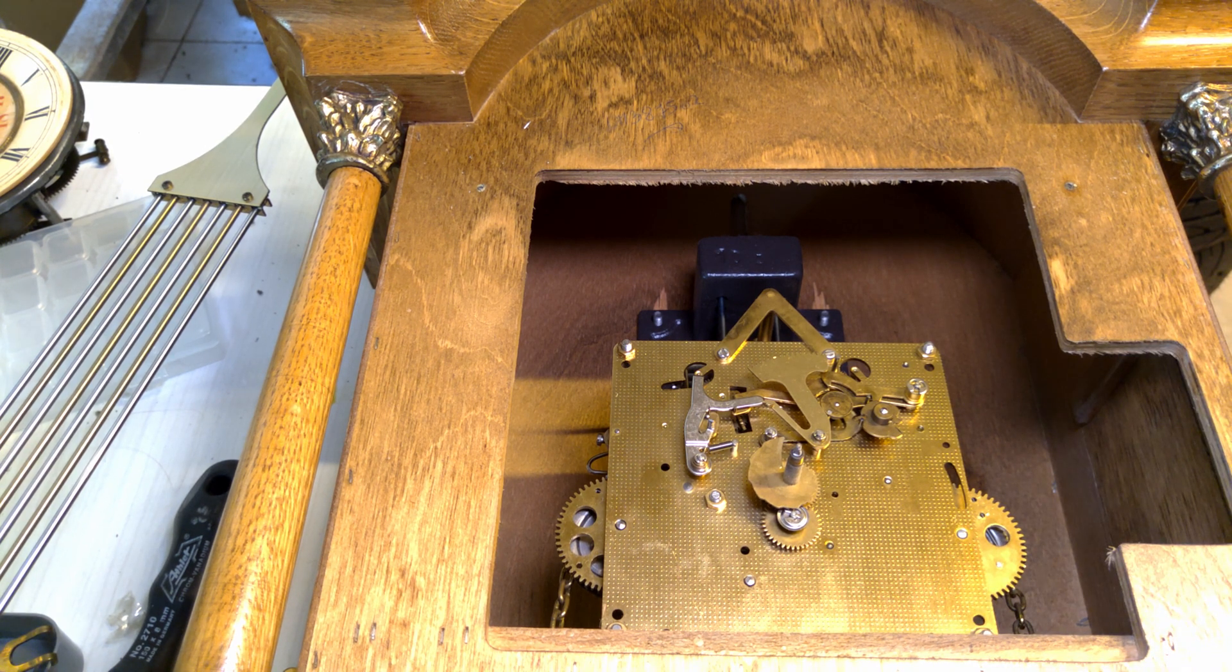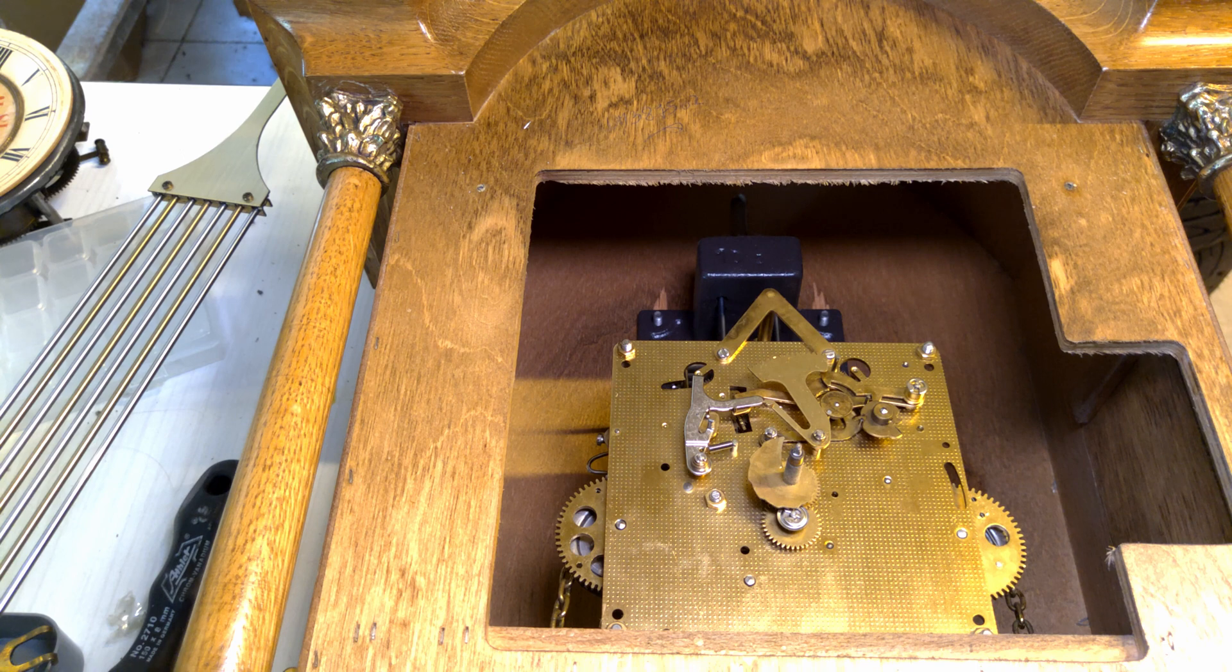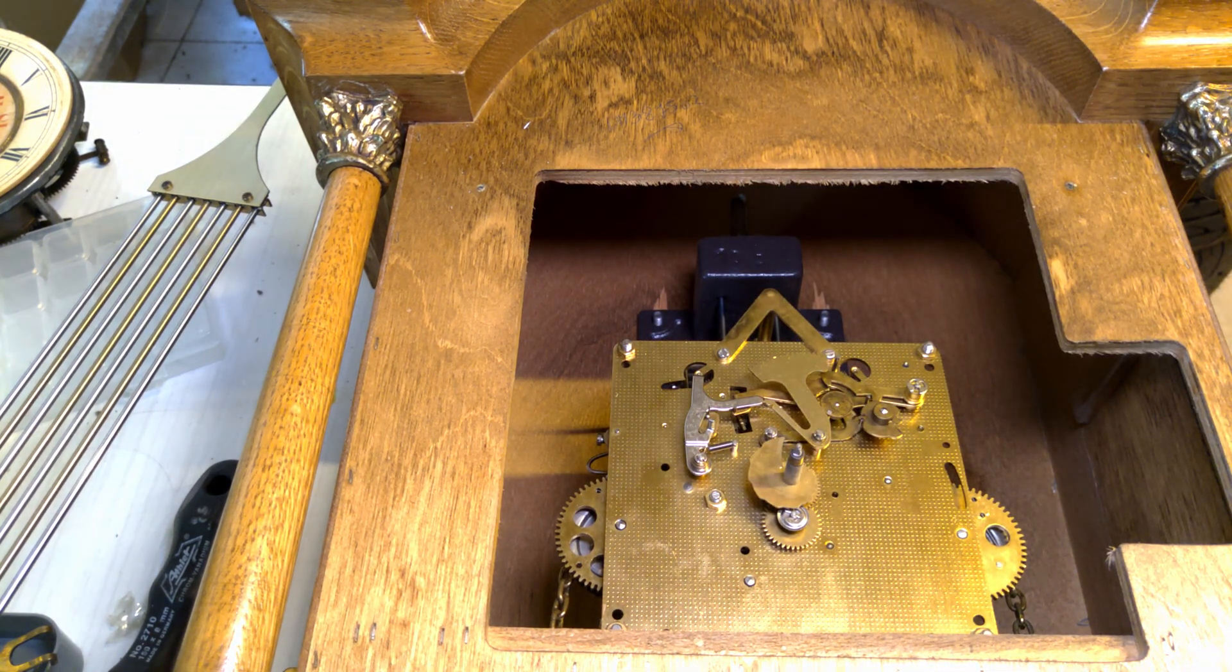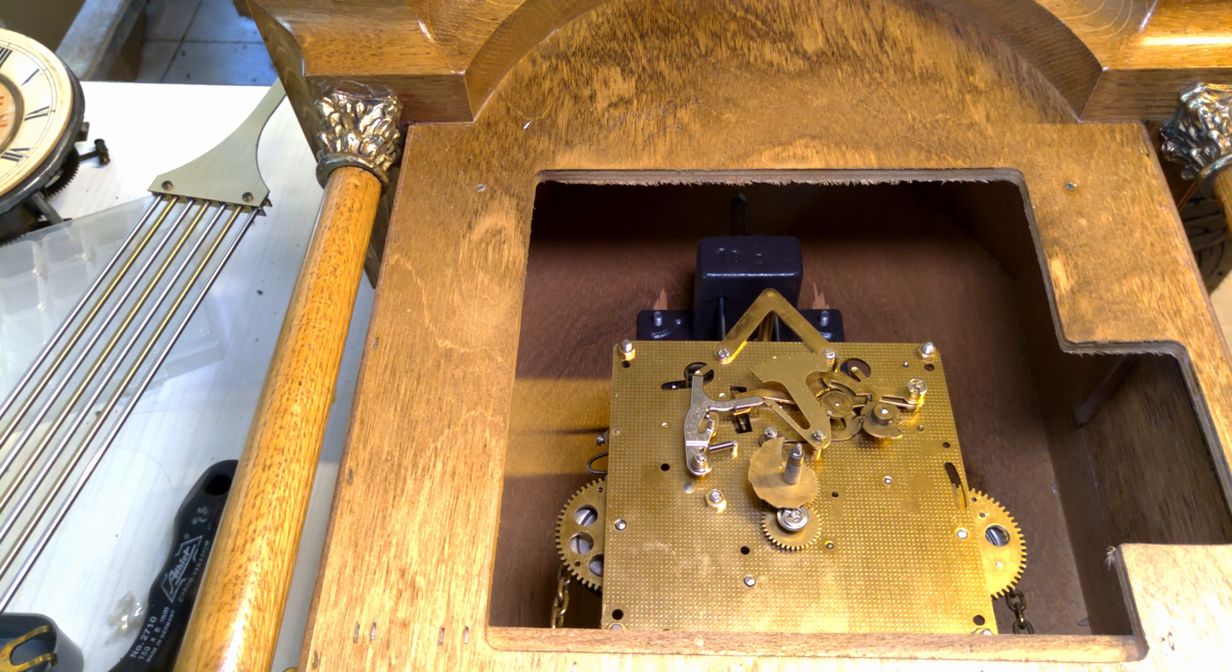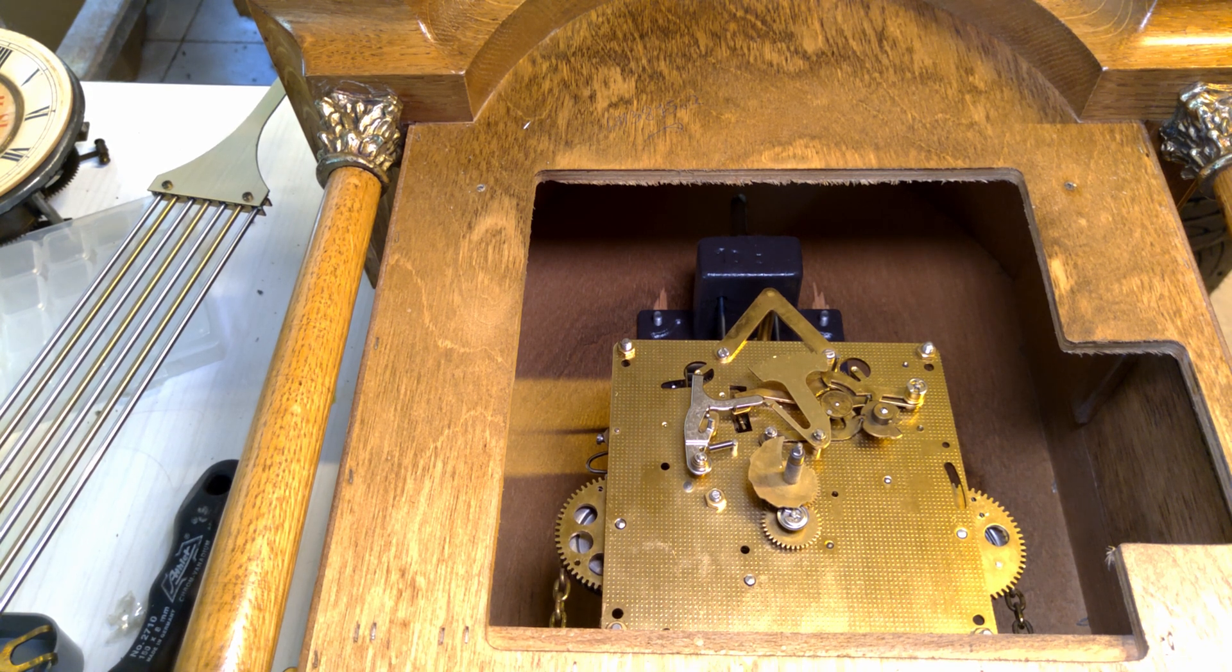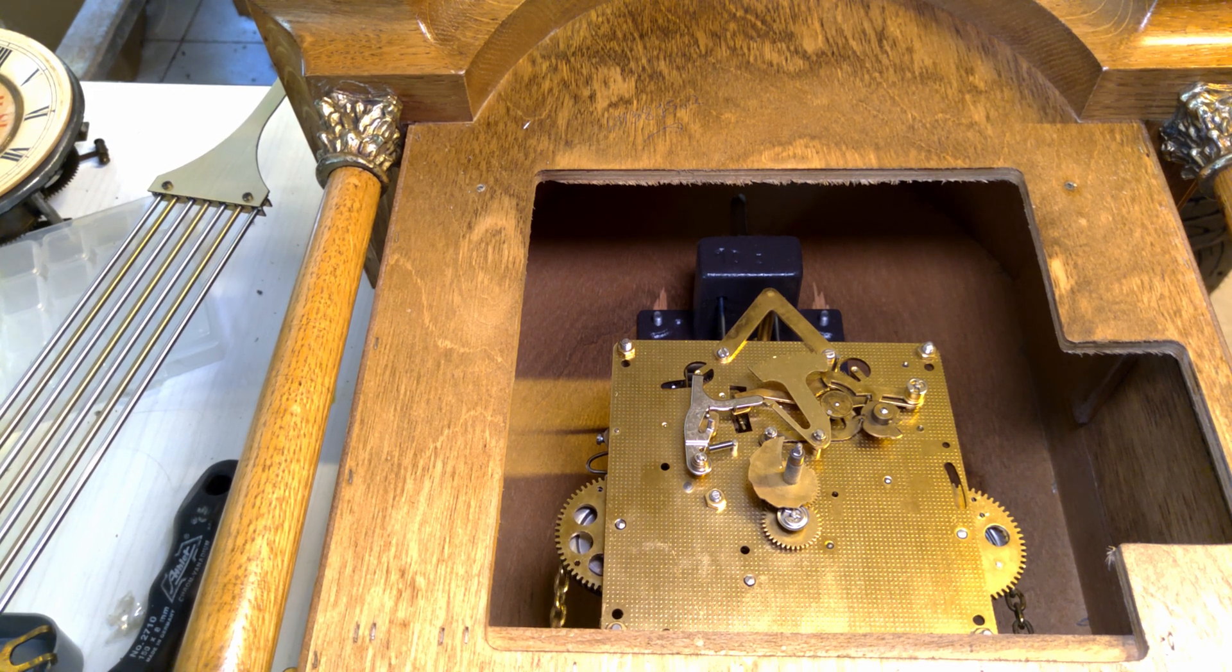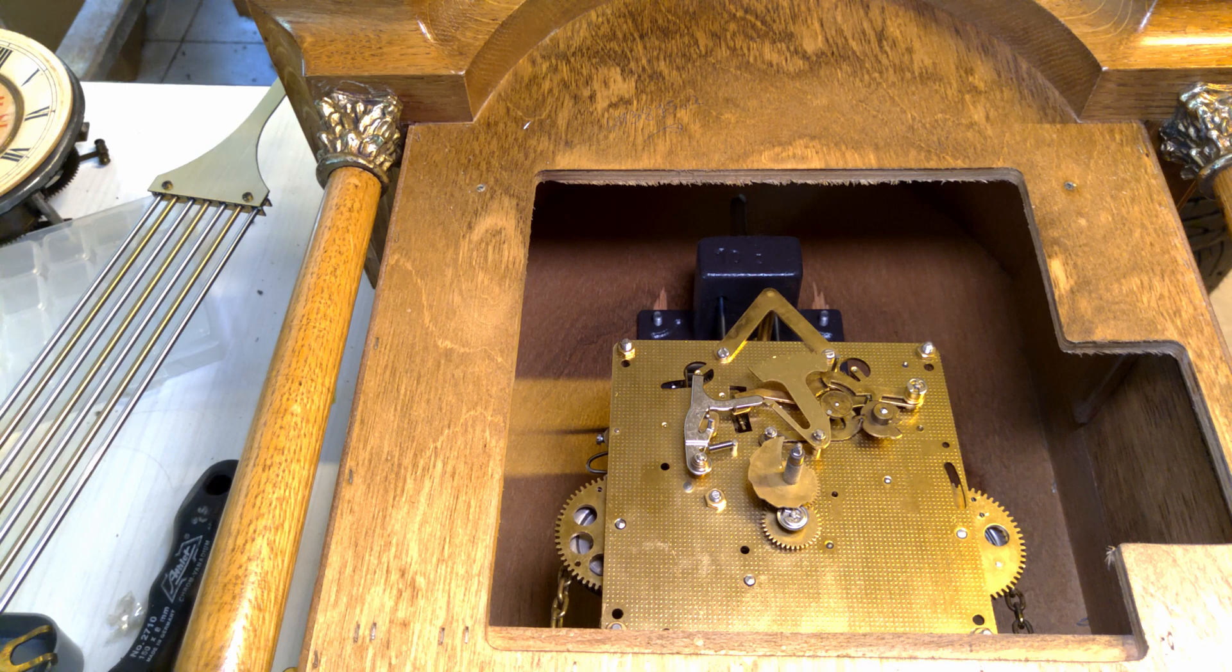It came in because one of the ratchets isn't doing anything, the one here on the left. I can just move it in both directions, which is not how it's supposed to work. Normally it should block in one direction and you should be able to pull it in the other direction.